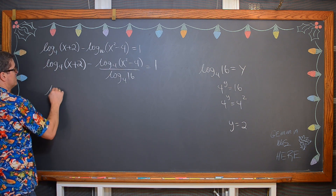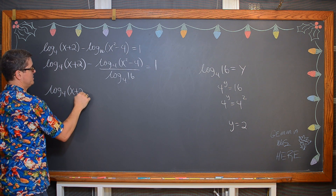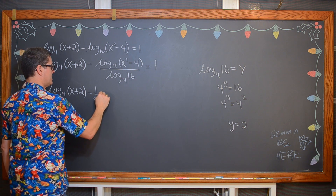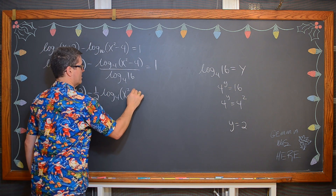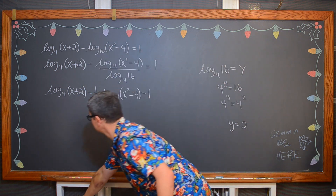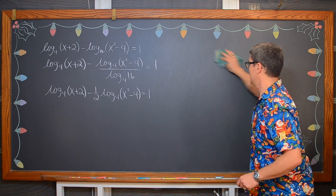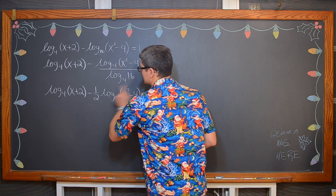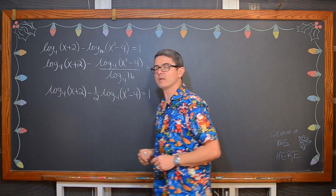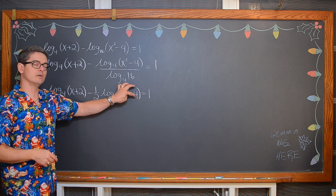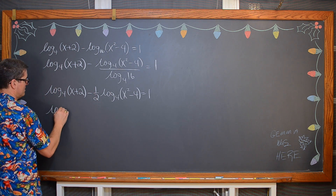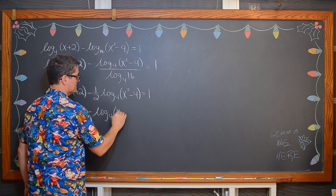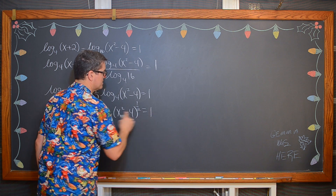I am also going to pull that out front, and we have log base 4 of (x plus 2) minus one half — again that denominator of 2, that division of 2 coming from the answer of log base 4 of 16 — times the log base 4 of (x squared minus 4) is equal to 1. Now I have still two log functions in my equation, but they have the same base, and that is going to allow us to condense those logarithms. But I can't do that until I deal with my coefficient of one half. The power rule is going to allow me to bring that one half up onto what I am taking the log base 4 of. So now we have log base 4 of (x plus 2) minus log base 4 of (x squared minus 4) to the one half power, and that is still equal to 1.